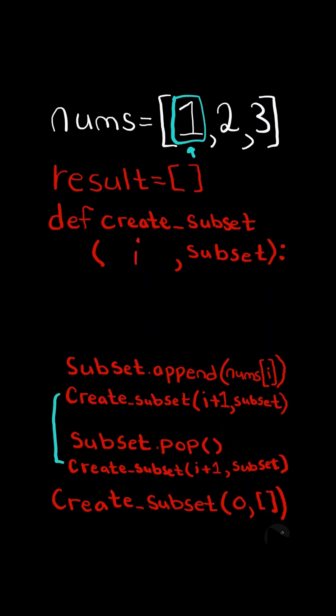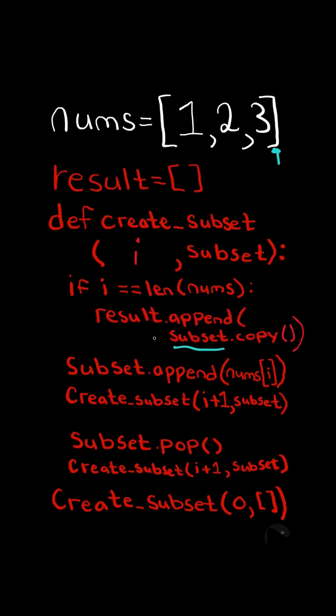These recursive calls will go through the list and generate all possible subsets. When the index reaches the length of the list, then we append the subset to our resulting list and return to end the recursion.